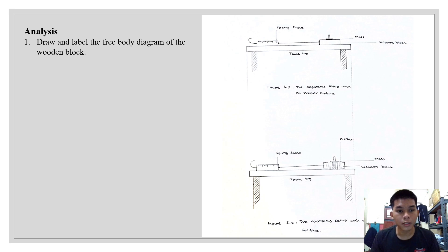So I'm going to tell you about the analysis. The first question is about the draw and label the free body diagram of the wooden block. This is about our drawing and the labeling which is for figure 5-1, the apparatus set up with the non-rubber surfaces, and the second is the apparatus set up with the rubber surfaces.